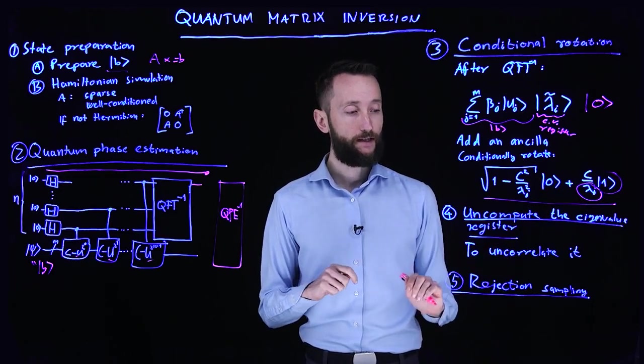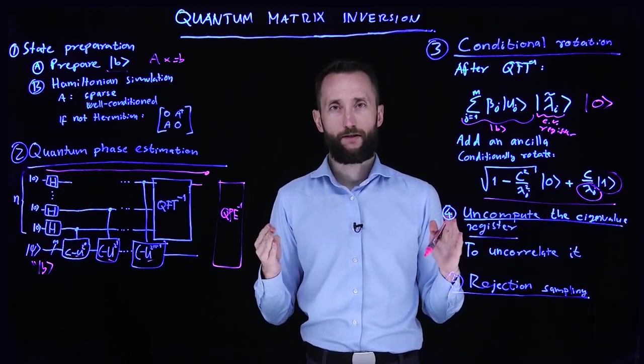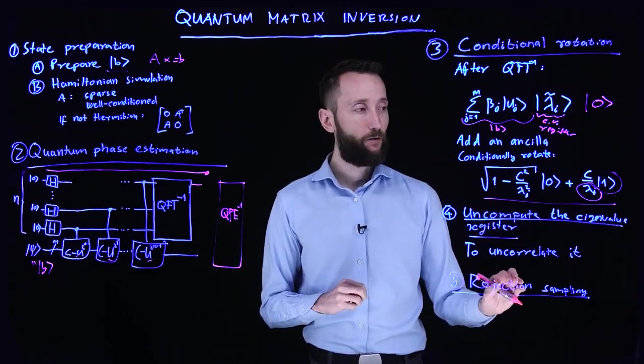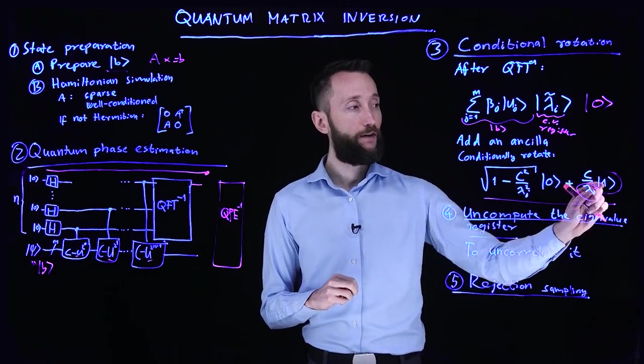So once we do this, first of all, our circuit is immediately twice as deep as it was. But once we do that, we can do this rejection sampling on this.